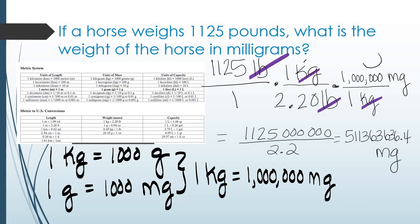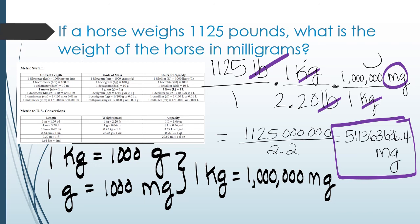The units still divide out — pounds divides out pounds, kilograms divides out kilograms — and our final answer is still in milligrams: 511,363,636.4 milligrams. It's a very big number because it's a very small unit. Thank you.